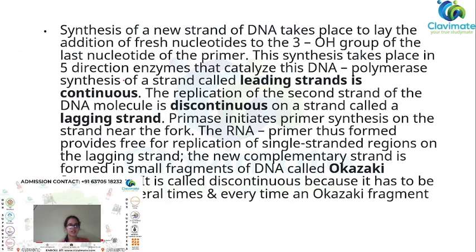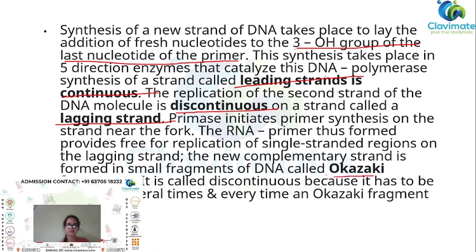Describing continuous and discontinuous synthesis of DNA: synthesis of a new strand takes place by the addition of fresh nucleotides to the 3'-OH group of the last nucleotide of the primer. This synthesis proceeds in the 5' direction on the leading strand, which is continuous. The replication of the second strand, called the lagging strand, is discontinuous. Primase initiates primer synthesis, and new complementary strands are formed in small fragments called Okazaki fragments. It is called discontinuous because synthesis must be initiated several times, producing an Okazaki fragment each time.